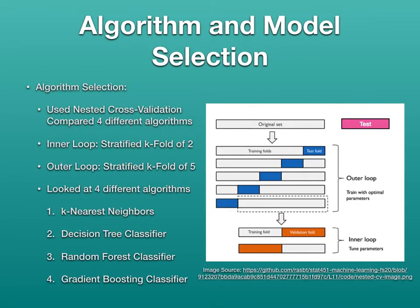For algorithm and model selection, I used nested cross-validation to compare four different algorithms. For the inner loop, I used a stratified k-fold of two, and for the outer loop, a stratified k-fold of five. The four algorithms I looked at were k-nearest neighbors, decision tree, random forest, and gradient boosting.